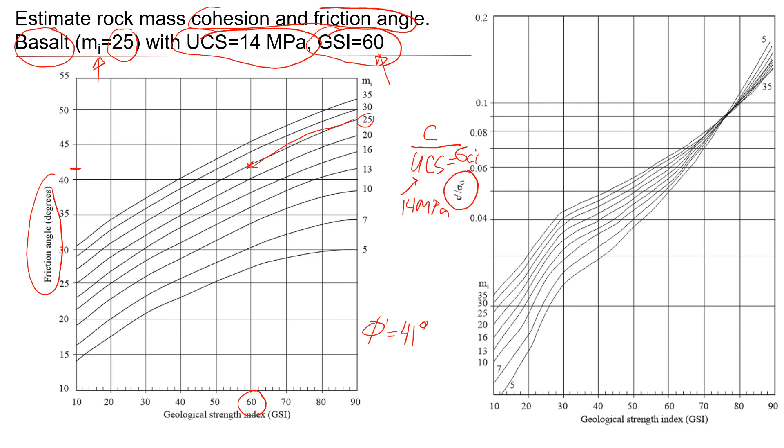So what we'll do next, again look at geological strength index, and it is 60. And look at mi, we have basalt 25. So that will be the line goes all the way here. So my estimation, this value will be 0.062. That's my estimation. Maybe you get a slightly different, that's okay.